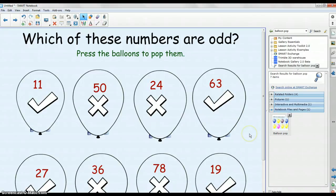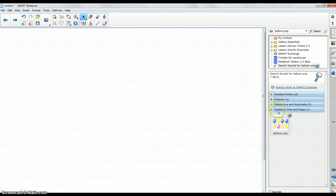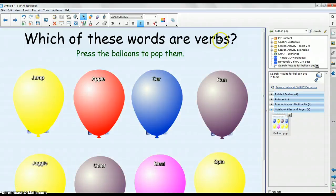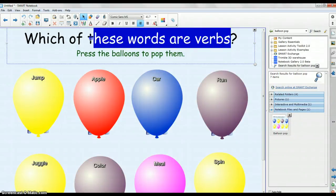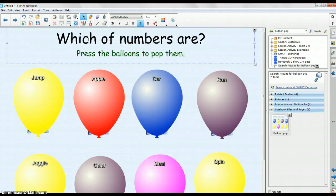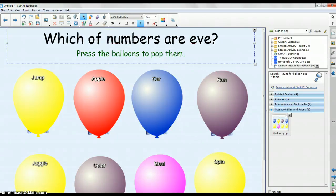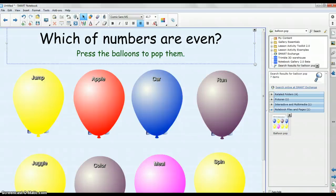So now what I would like you to do is to start a new page. Search and find balloon pop. And I would like you to create a page that asks which of these numbers are even. So what you'll do is go ahead and edit each balloon like I showed you. Edit the answers, and then you will have your own smart notebook page where students need to identify even numbers.